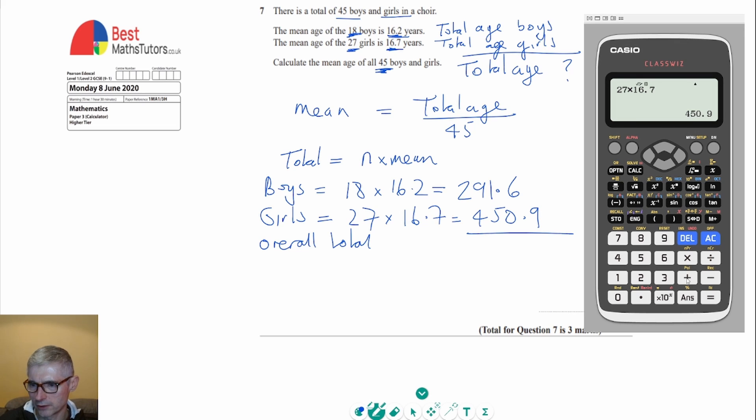So I'm just going to add 291.6 to that and 742.5. Okay, 742.5 is the overall total, rounded up all the ages of all the boys and all the girls.